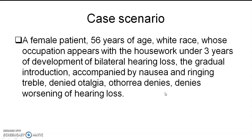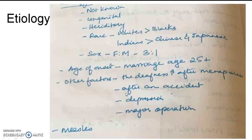Coming to the case scenario: a female patient, 56 years of age, white race, whose occupation is housework. Over the past three years she has developed bilateral hearing loss, gradual in onset and gradually progressive, accompanied by nausea and ringing. She denies otalgia and otorrhea, and also denies worsening of hearing loss.